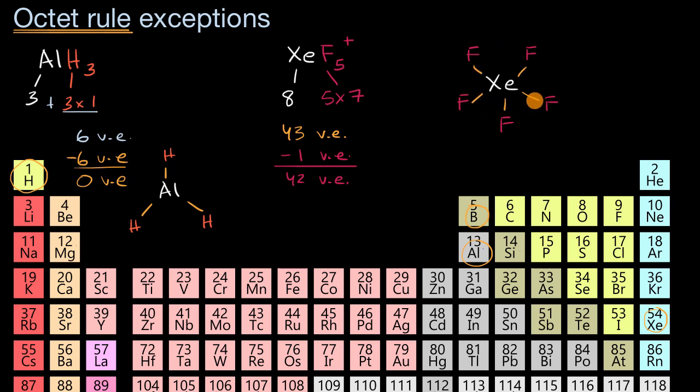So just like that, I have accounted for 10 valence electrons because you have two valence electrons in each of these covalent bonds: two, four, six, eight, ten. So let me subtract 10 valence electrons, and then we are left with 32 valence electrons.